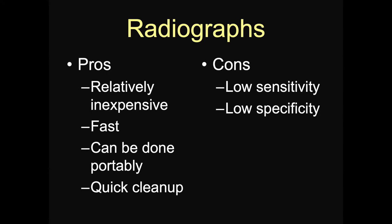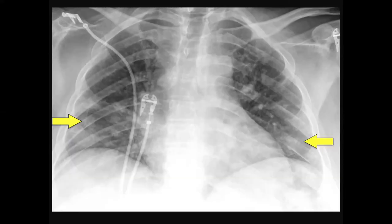The downsides to radiographs, of course, is their low sensitivity and low specificity. Chris Cuomo's radiograph was being shown on CNN, and most of us in chest radiology took one look and said it was normal — yet he's a proven case of COVID-19. So not great sensitivity or specificity. If you see something on the radiograph it may be helpful, but not always. Let's look at a few cases.